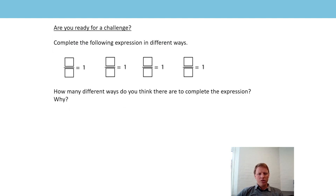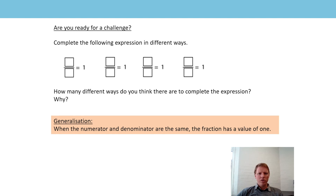The challenge was this - you were asked to complete the following expression in different ways. That generalisation is super important: when the numerator and denominator are the same, the fraction has a value of 1. So you could have put in any fraction you wanted, as long as the numerator and the denominator were the same. For example: 5 fifths is equal to 1, 9 ninths is equal to 1, 12 twelfths is equal to 1. You could have any numbers you like - I've chosen 99 ninety-ninths. How many different ways could there have been? There's an unlimited number, but each time the numerator and denominator must have the same value.